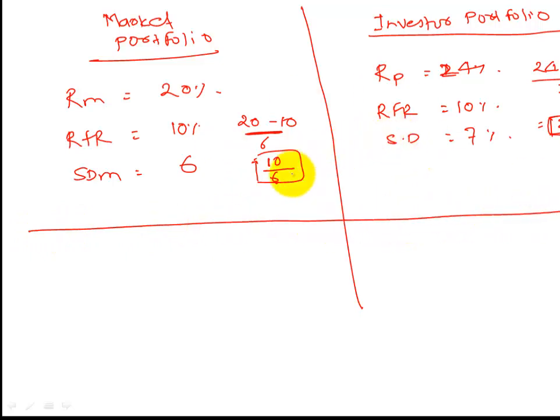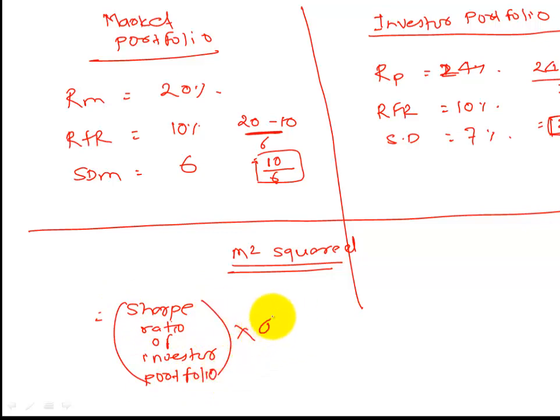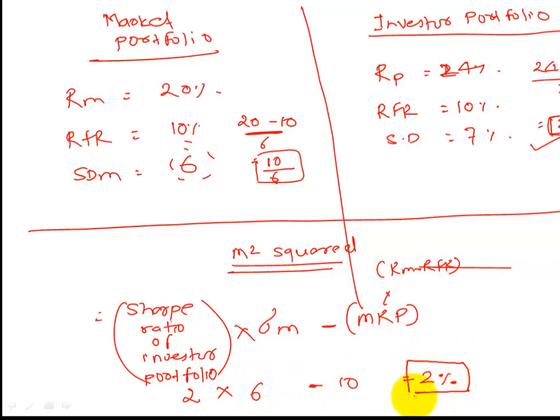Now the same calculation we can do in the context of an M-squared ratio. The same formula that we saw on the previous screen, I'm going to write it in a slightly different fashion. Here we will say Sharpe ratio of investor's portfolio multiplied with standard deviation of the market minus market risk premium. Market risk premium is of course return on market minus RFR. Sharpe ratio of investor's portfolio, we just calculated, came out to be 2. So this number is 2 into standard deviation of the market which gives us 6, minus market risk premium. How much have markets earned over and above RFR? They've earned 10. This will give us an M-squared ratio of 2, but now the unit of this is in percentage.